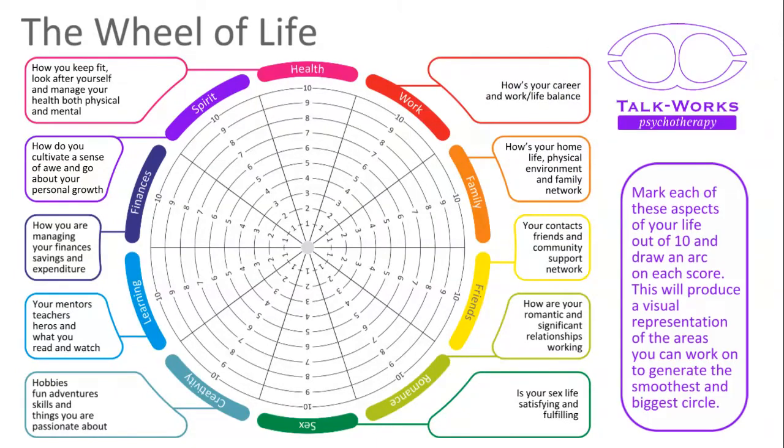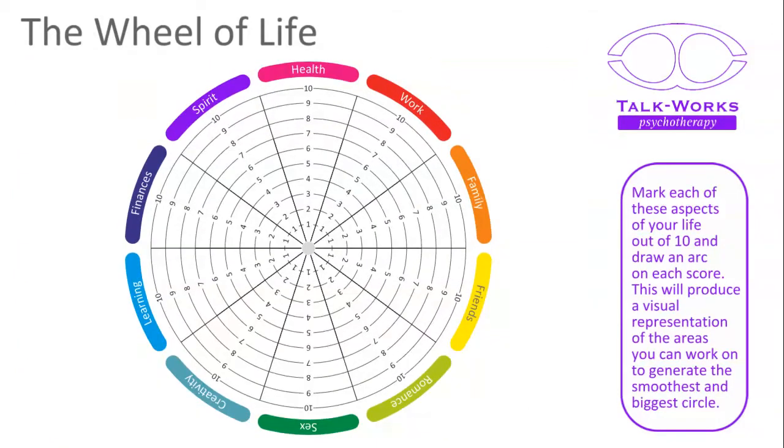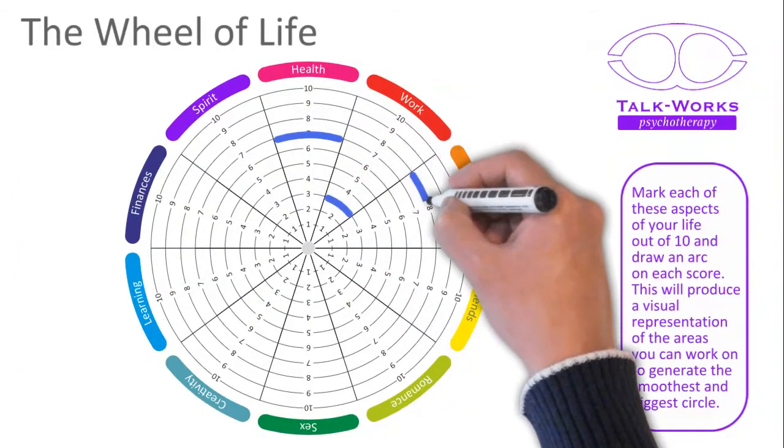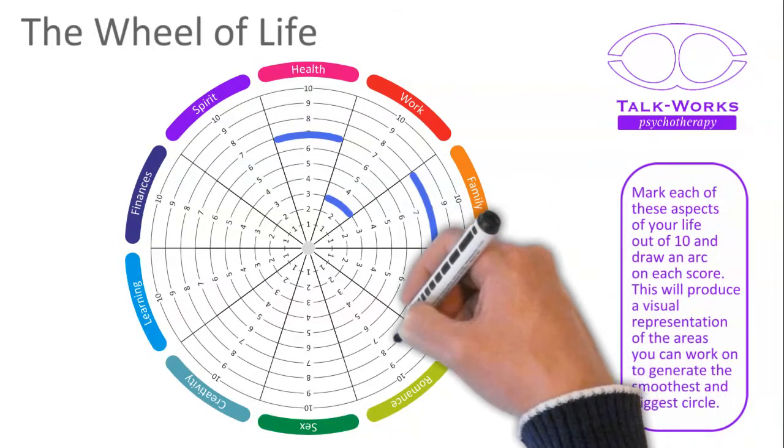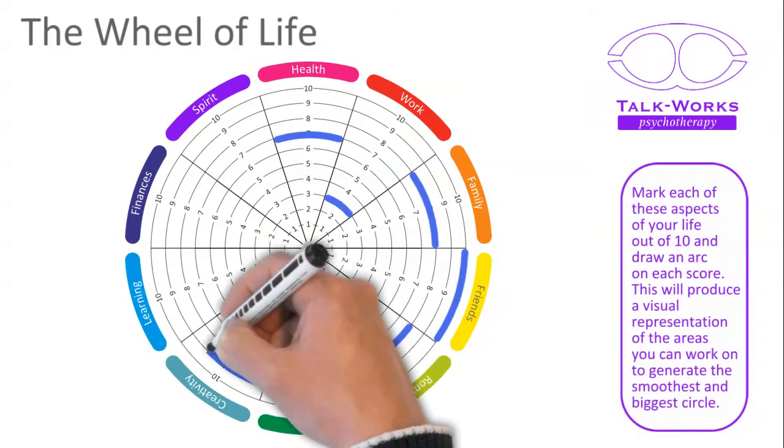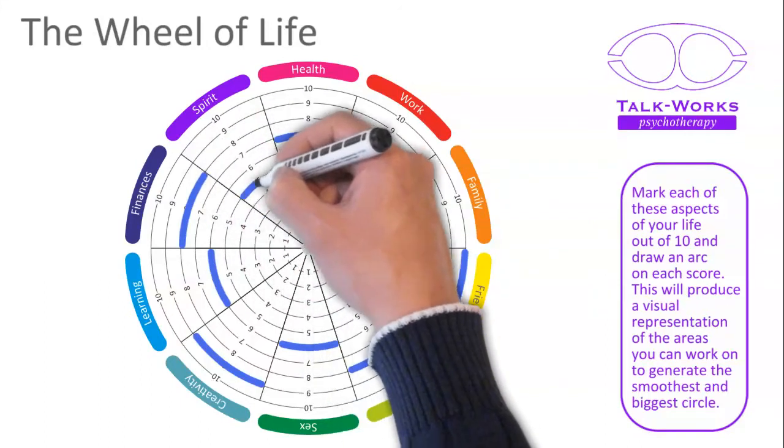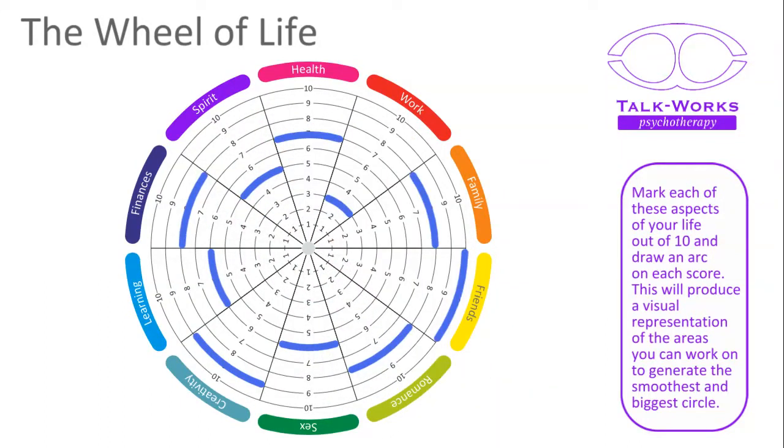The way this works is to mark each of these aspects of your life out of 10 and draw an arc on each score. This will produce a visual representation of the areas you can work on to generate the smoothest and biggest circle.